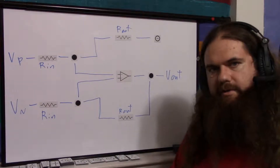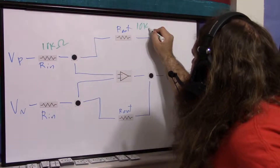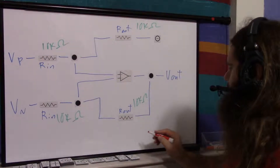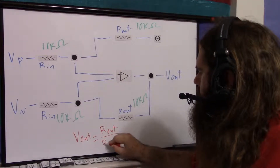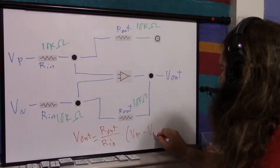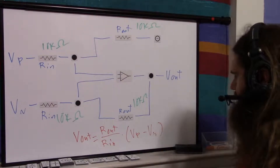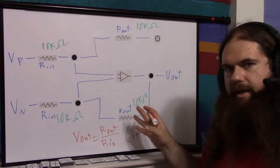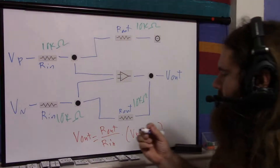Let's assume all four resistors are the same value — say 10k ohms each. The result is very simple: v_out equals (R_out / R_in) times (vp minus vn), exactly what we want. R_out over R_in is our gain. If they're both 10k, the gain is one, so this is unity gain — it simply subtracts vp and vn and gives us the exact result.